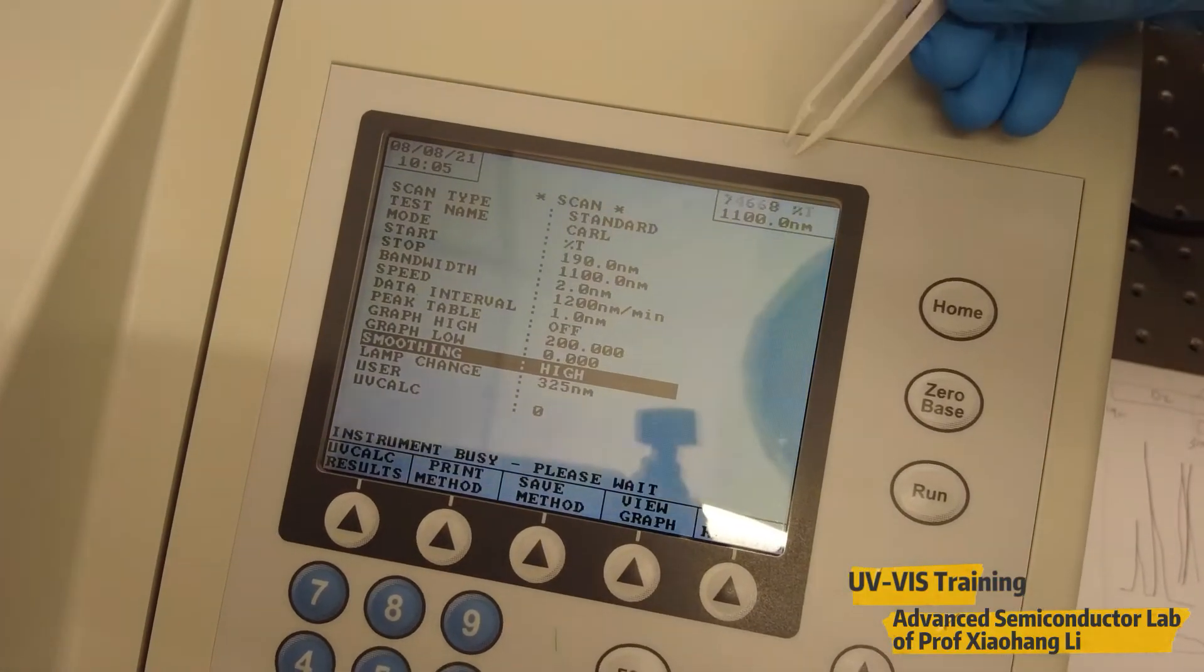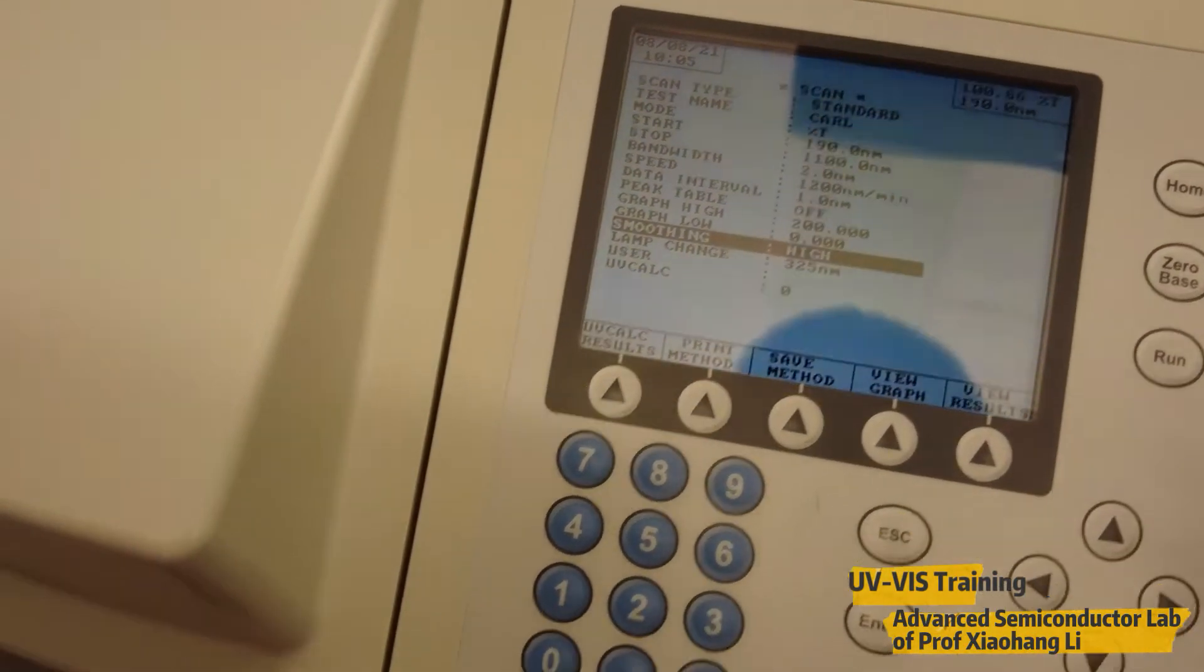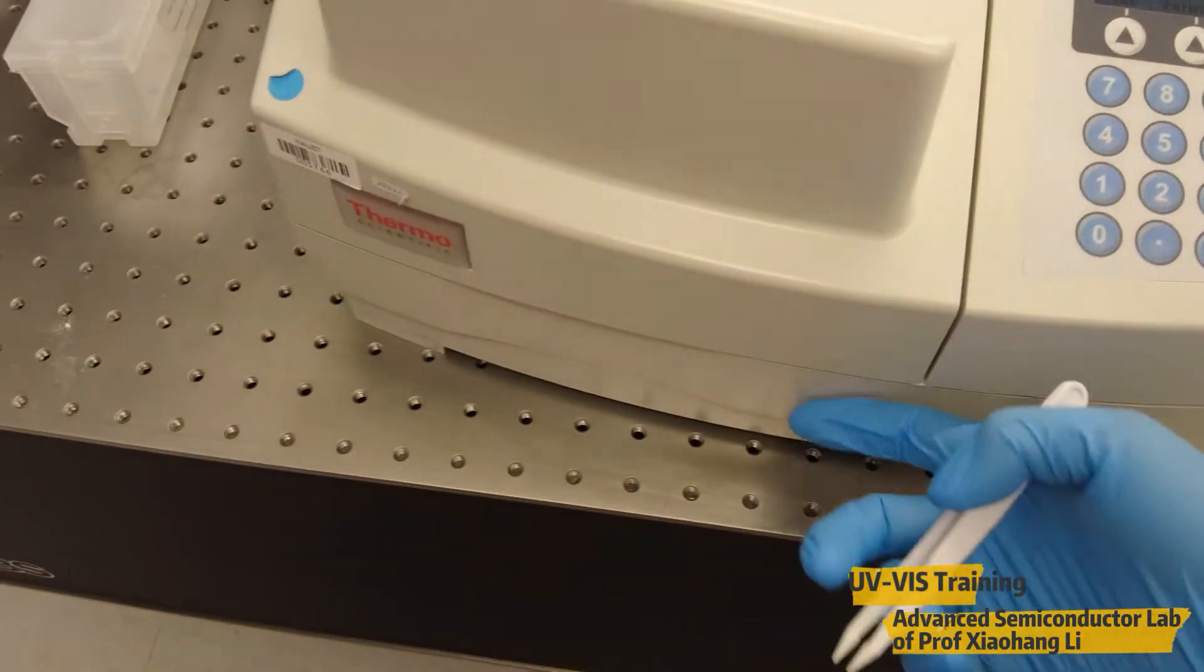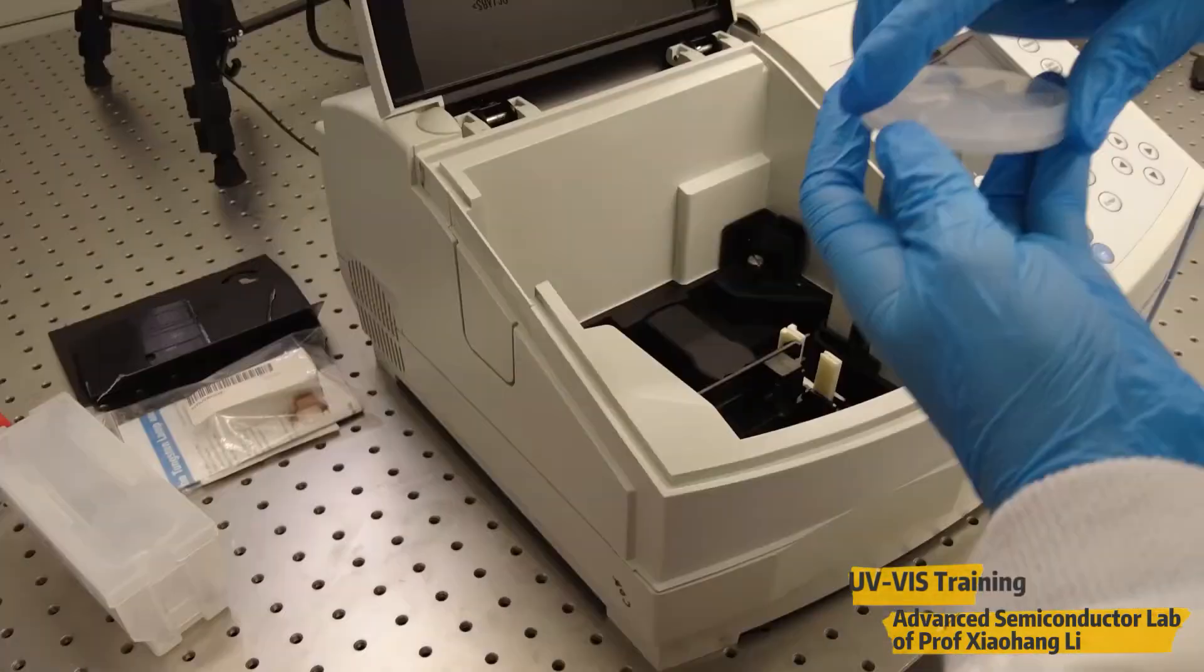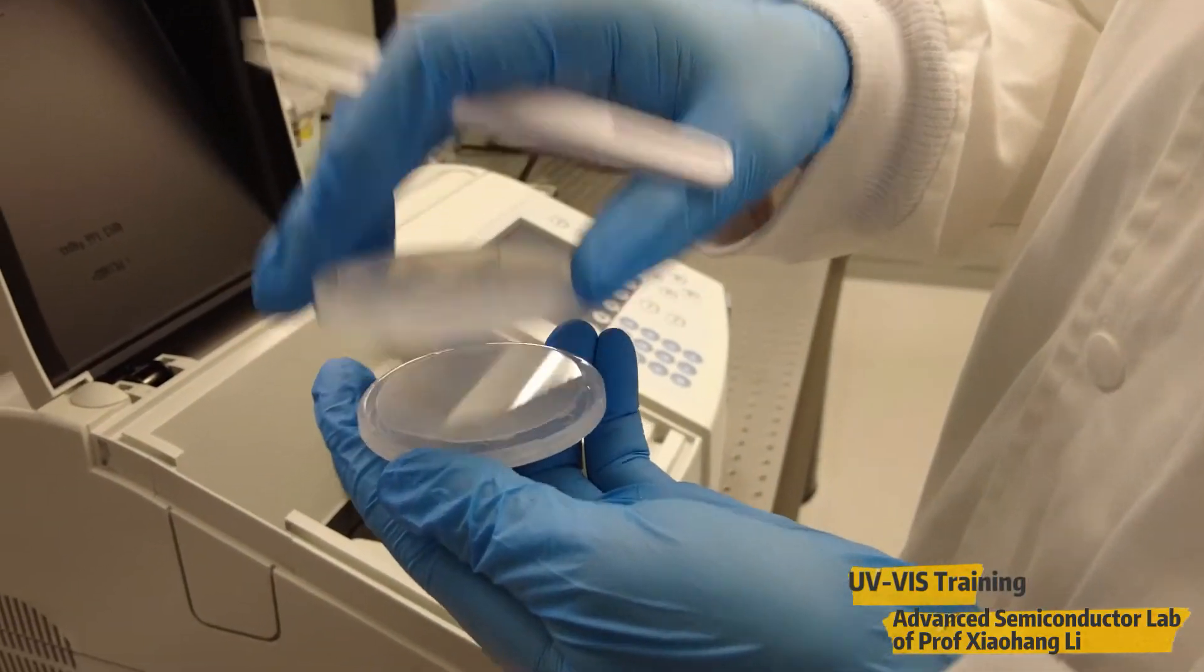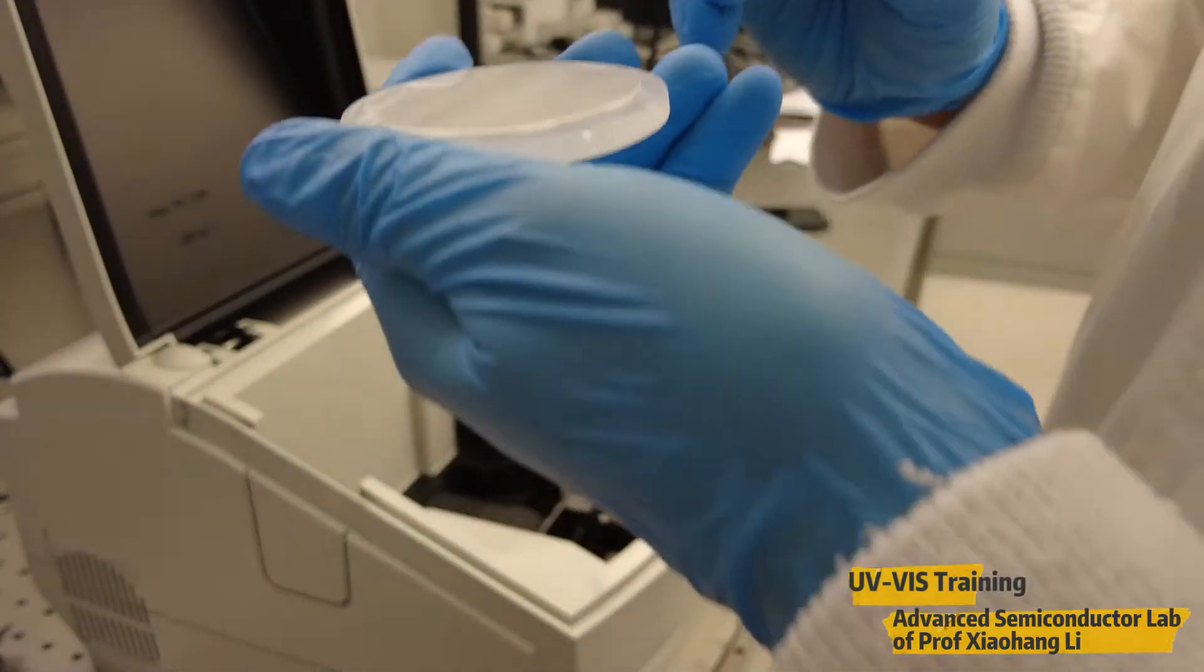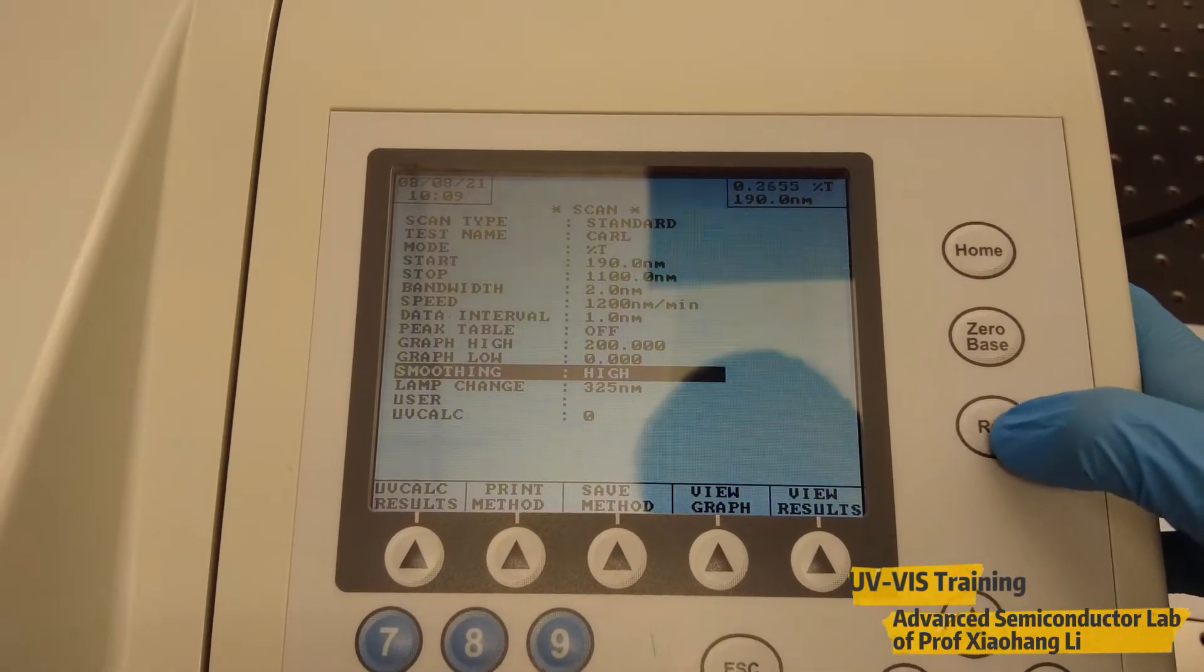As you can see it's already reached 1100 nanometer. Let's start to measure the gallium nitride. We'll take the sapphire substrate out. Then we'll put the gallium nitride film. Let's put the gallium nitride sample inside. By pressing run it will start the measurement.